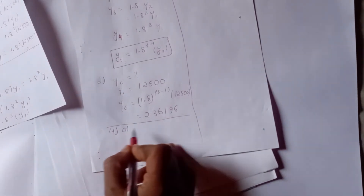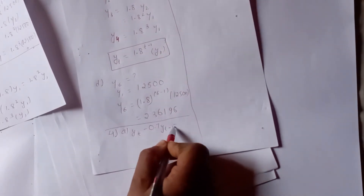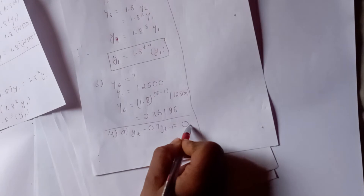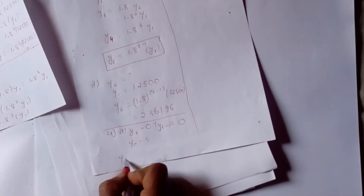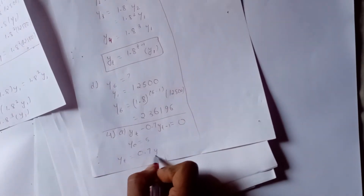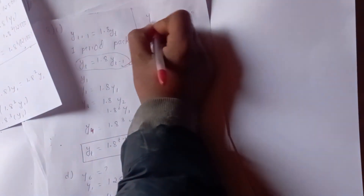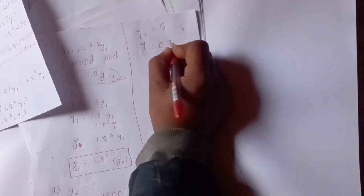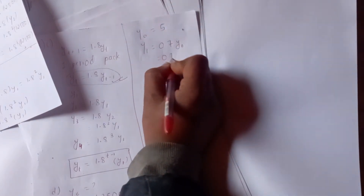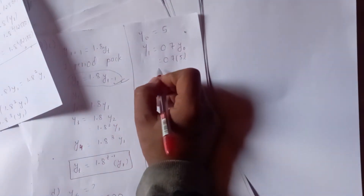The next problem: yt minus 0.7 times yt minus 1 equals 0, with y0 equals 5. So yt equals 0.7 times yt minus 1, with initial condition y0 equals 5.